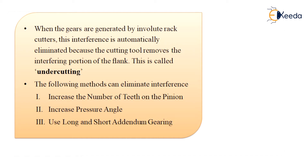Interference is the main disadvantage of involute gears. It is maximum when the smallest pinion is in mesh with the largest gear. There are following methods which can eliminate interference: the first is to increase the number of teeth on the pinion, the second is to increase the pressure angle, and the third is to use long and short addendum gearing. Thank you.